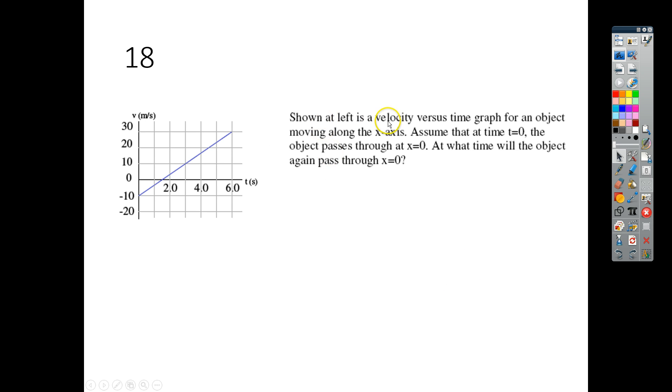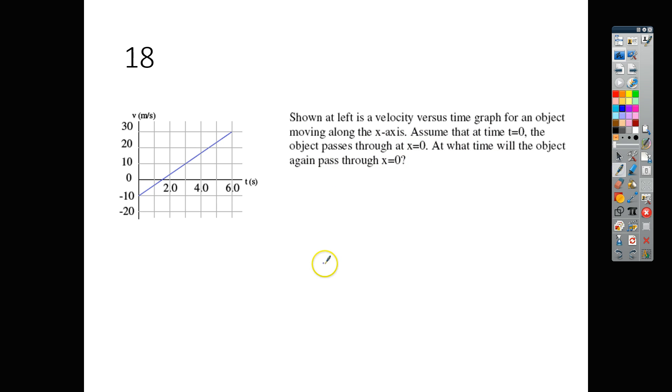For number 18, shown at left is the velocity versus time graph for an object. So this is velocity. We notice that this thing is accelerating. It says assume at time 0 the object passes through 0. At what time will the object again pass through 0? So we really need to think about this.